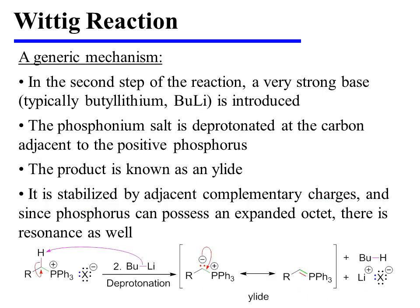In the second step of the reaction, a very strong base, typically butyllithium, is introduced. As a result, the phosphonium salt is deprotonated at the carbon adjacent to the positive phosphorus. The product of this step is known as a ylid. It is stabilized by adjacent complementary charges, and since phosphorus can possess an expanded octet, there is resonance as well, and in this resonance form, all atoms possess no formal charge.